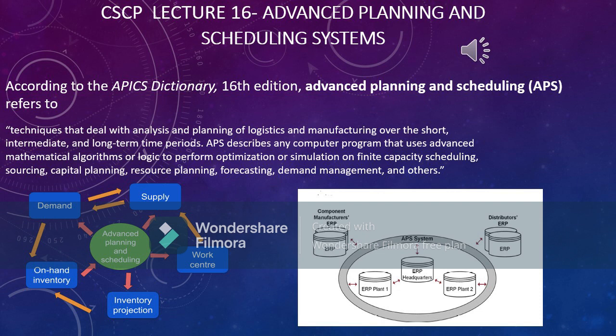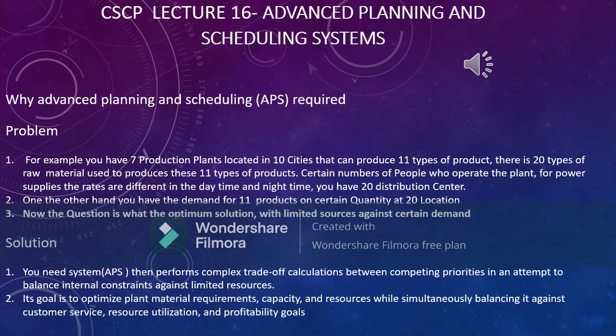Let's go for the definition. As you can see in the picture, as per APICS: APS is a technique that deals with analysis and planning of logistics and manufacturing over the short, intermediate, and long-term time periods. APS describes any computer program that uses advanced mathematical algorithms or logic to perform planning and scheduling.